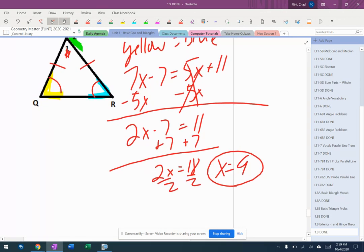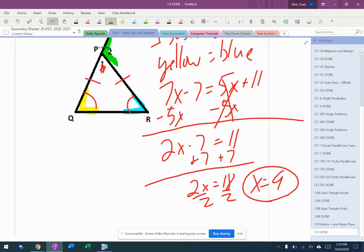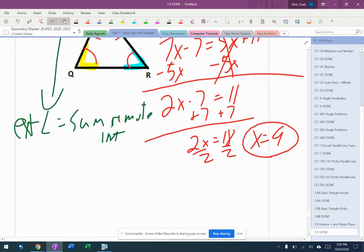All right, angle 2. So now angle 2, let's see how I want to write this. I'm going to write exterior angle equals sum of remote interior. So it's going to be yellow plus blue. Well, that's nice because I can just plug that 9 back in.